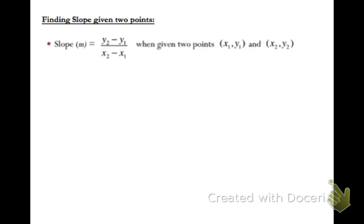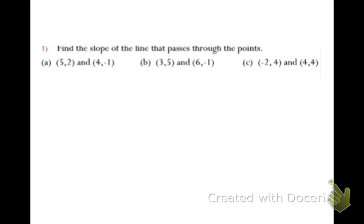Here's the formula again: y2 minus y1 over x2 minus x1. We're going to find the slope given points. We don't have a table of points to pick from — we just have the points given to us. So we're going to start with y2 minus y1 all over x2 minus x1. Negative 1 minus 2 is negative 3, over 4 minus 5 is negative 1. If we simplify that, we just get a positive 3.